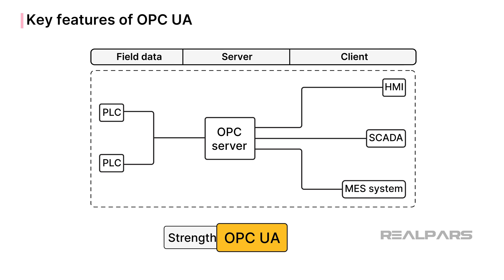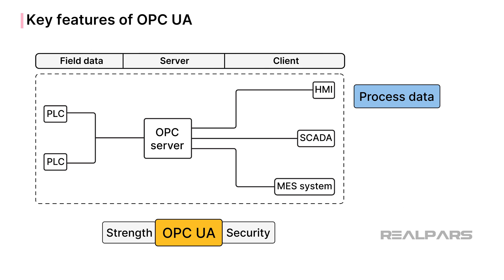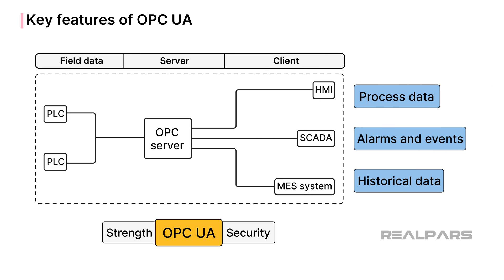In order to correct these issues and to provide a more robust and secure method for exchanging data, the OPC UA architecture was developed. OPC UA makes it possible to exchange process data, alarms and events, and historical data, all from one client and server application.